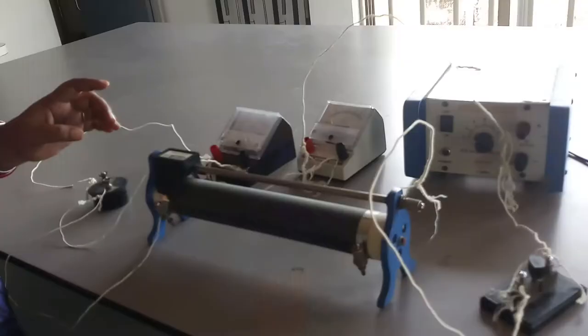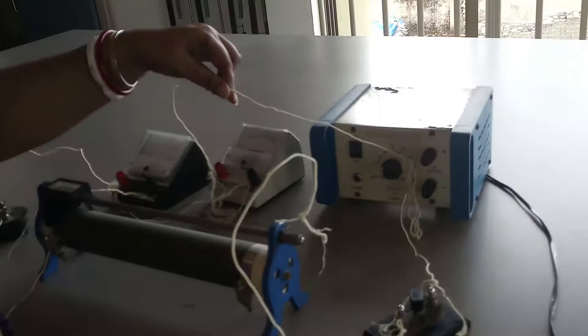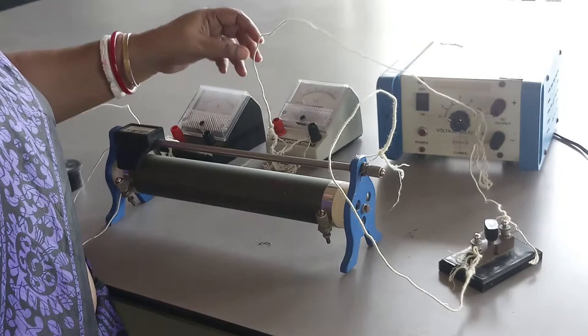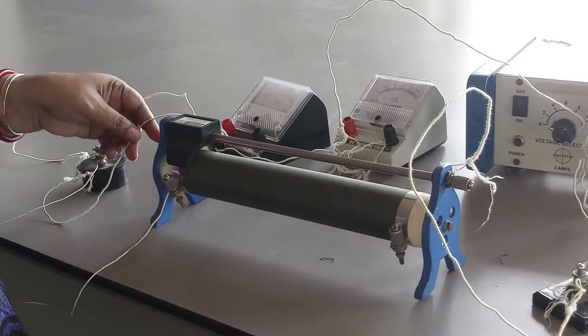Here we have the battery eliminator. The positive of the battery eliminator is connected to the positive of the ammeter. The negative of the ammeter is connected to the positive of the voltmeter. The negative of the voltmeter as well as the positive, both are in parallel with a resistor.